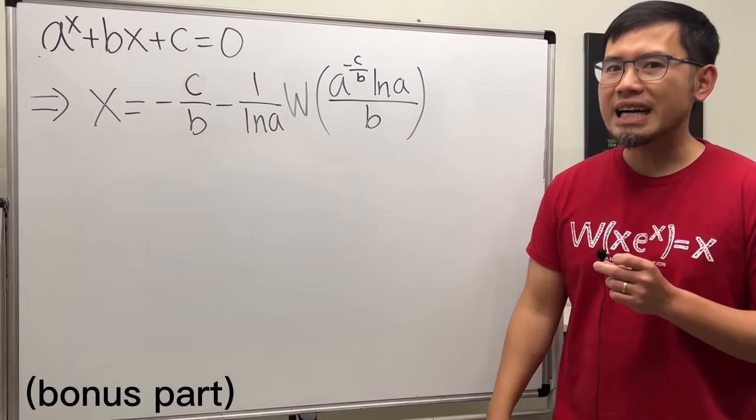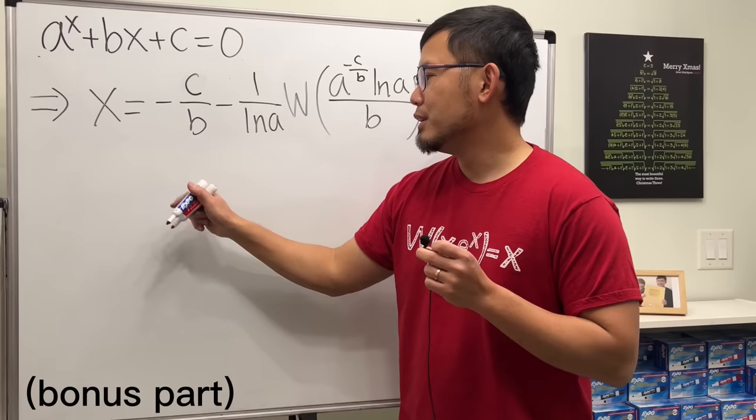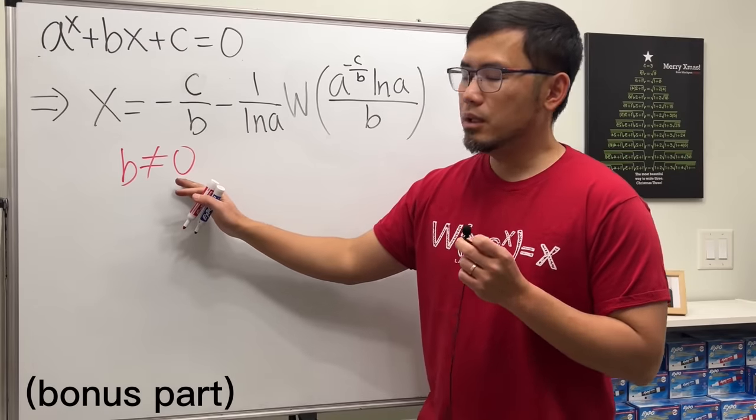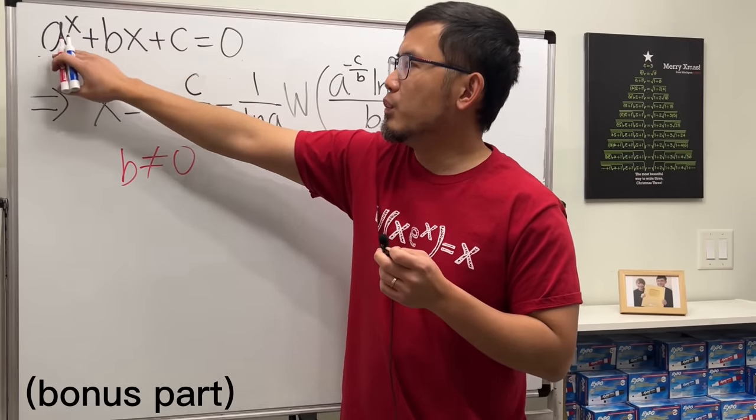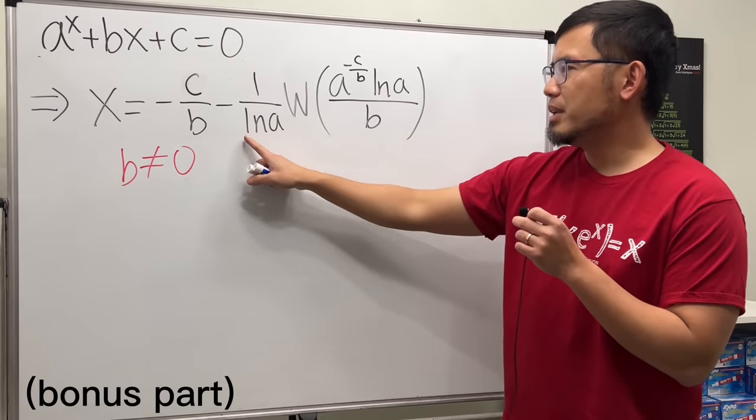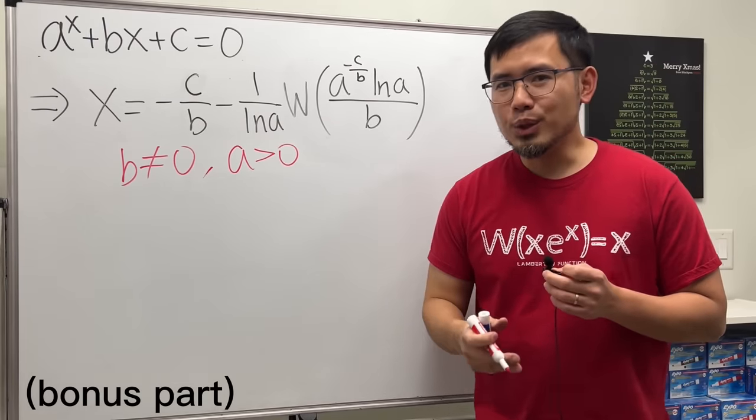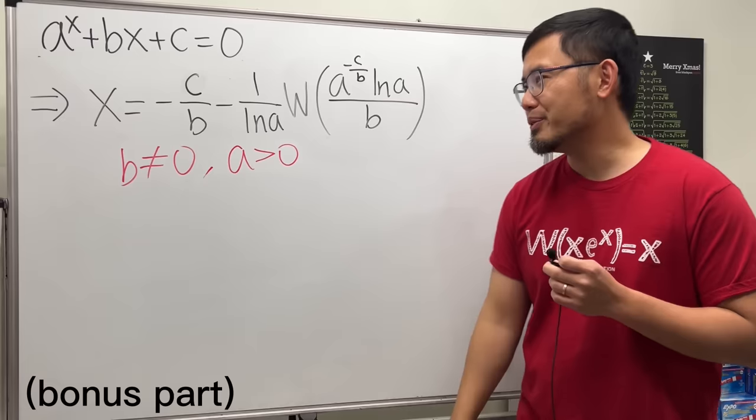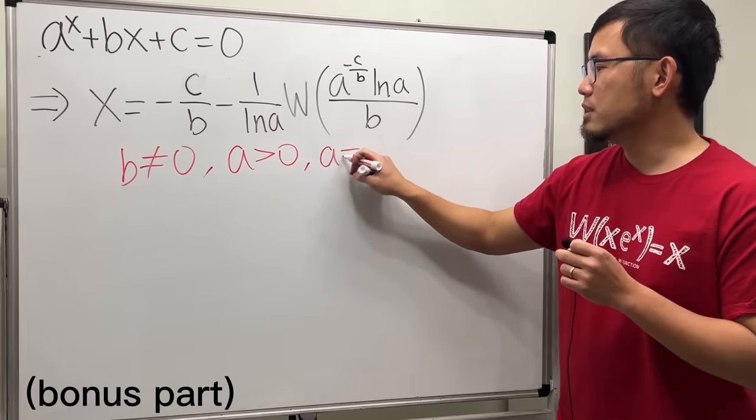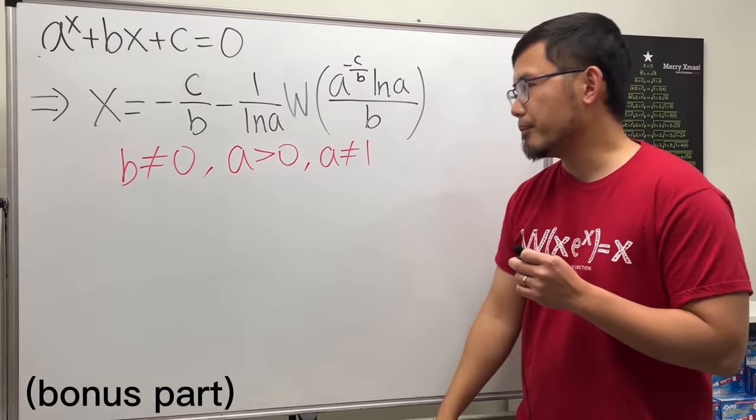Alright. So this is the formula that we got. And now let's talk about the condition. Firstly, we see that we have the b on the bottom. So right away, we should say that b cannot be equal to zero. In fact, if b was equal to zero, then we wouldn't have this term and we can actually just solve that equation by using the usual logarithm. Next, because we have ln a, that means a shall be positive, unless you want to deal with some complex solutions. But I'm going to leave that to you. And also because ln a is on the bottom, so we also have to make sure a cannot be equal to one, because ln 1 is zero and we don't want to divide it by zero.